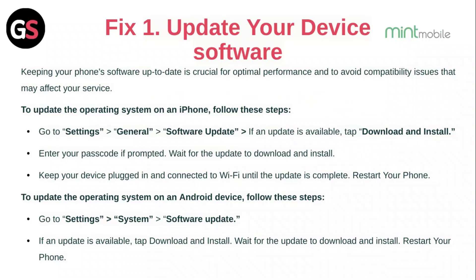If an update is available, tap Download and Install. Enter your passcode if prompted and wait for the update to download and install. Keep your device plugged in and connected to Wi-Fi until the update is complete, then restart your phone.